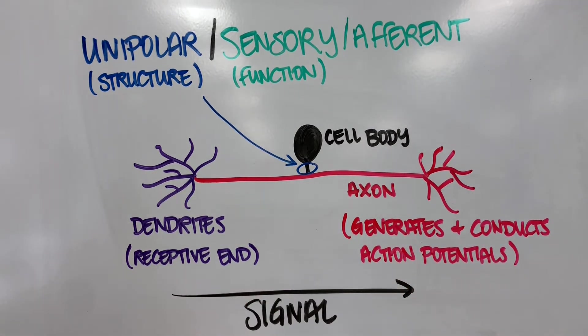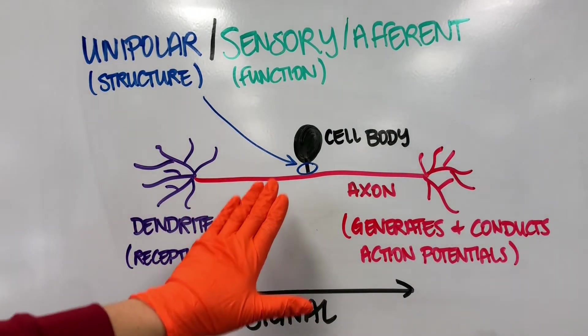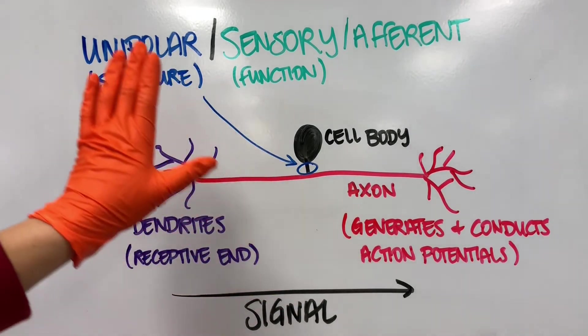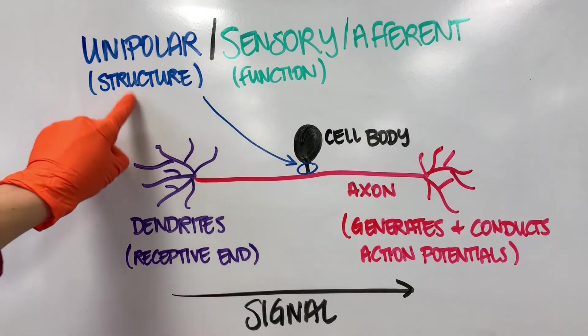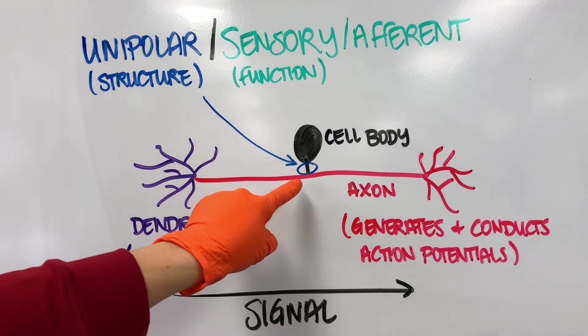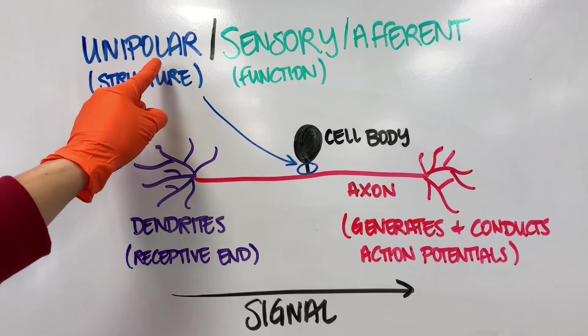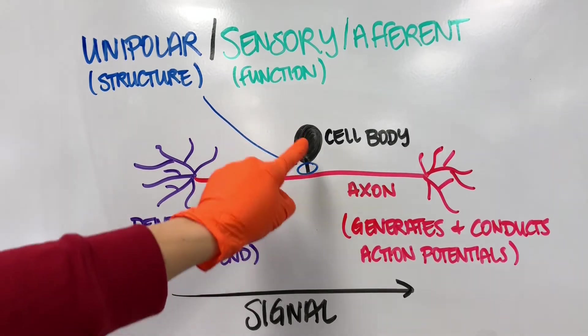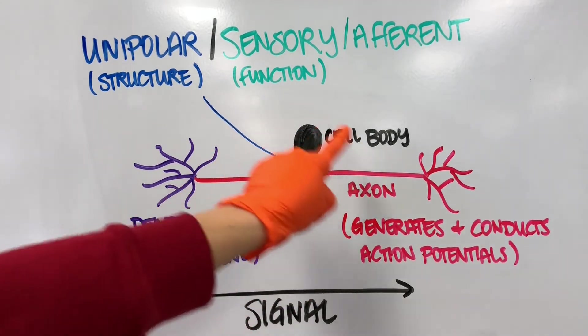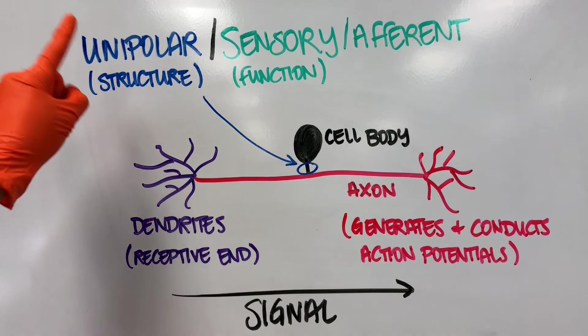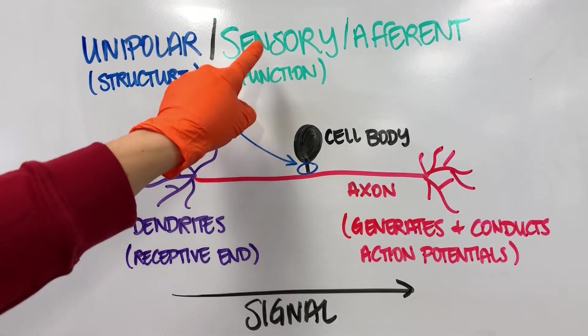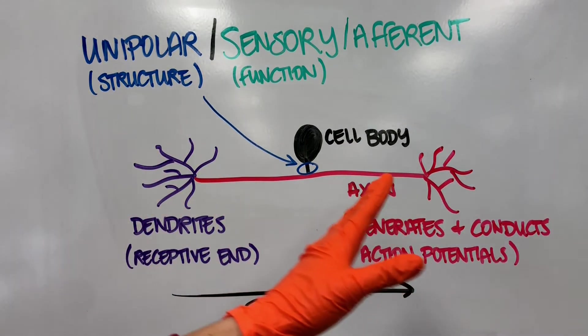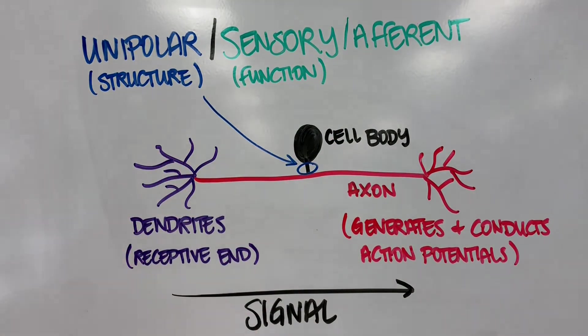When you're looking at these neurons and we're asking about the structural versus functional class, I want you to think: structure refers to what it physically looks like. A unipolar neuron has one process coming off of that cell body, so the structural classification is unipolar. But what do unipolar neurons do? What is their function? They transmit sensory information; they are along the afferent pathway.